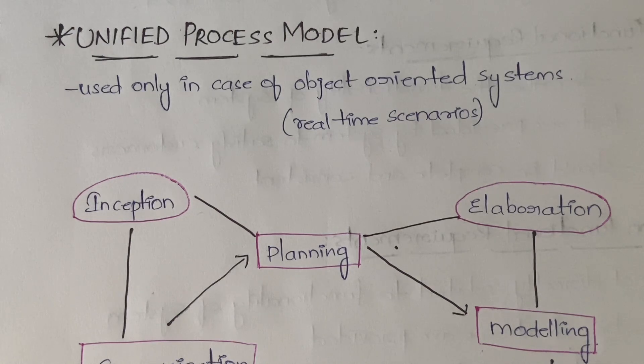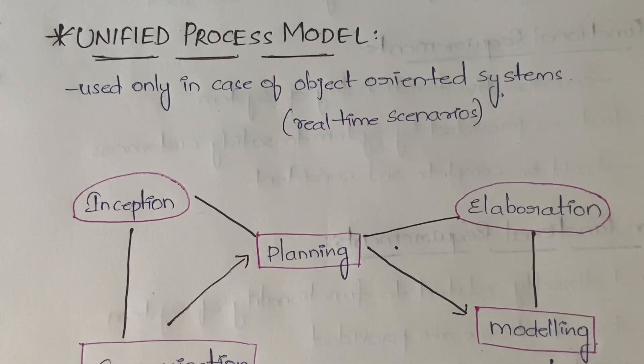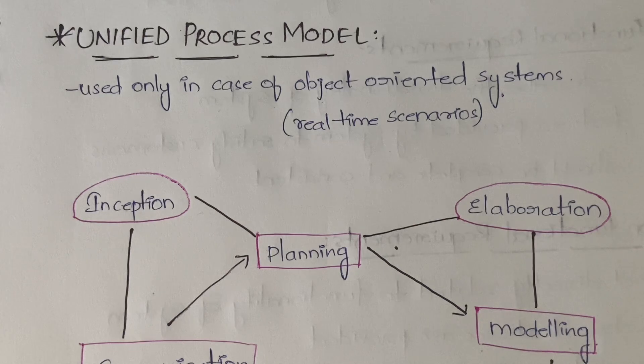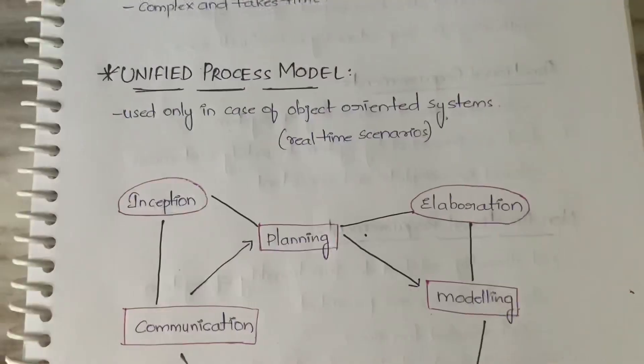The unified process model is basically used in the case of object-oriented systems. What do you mean by object-oriented systems? Simply real-time systems. You will be using this unified process model in case of real-time systems.